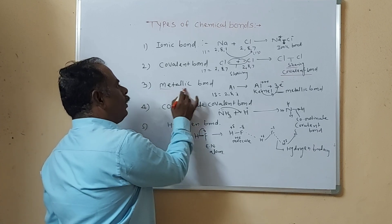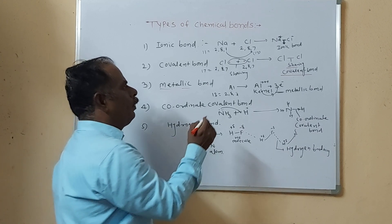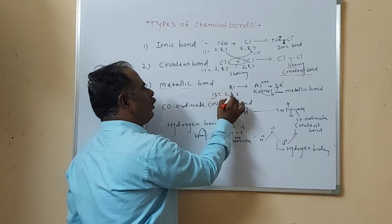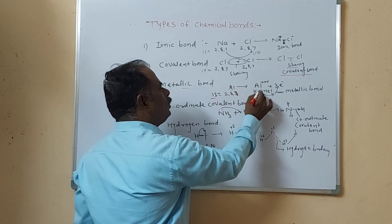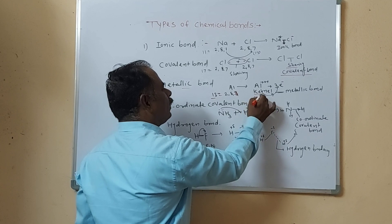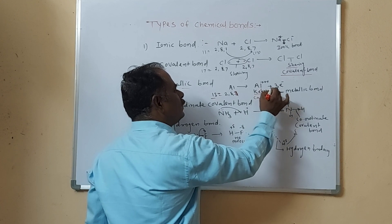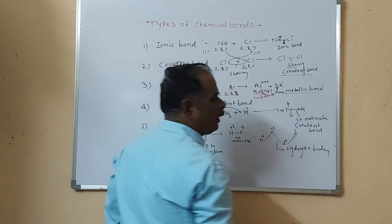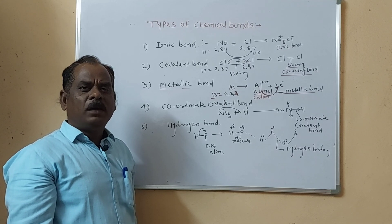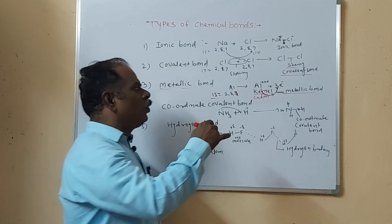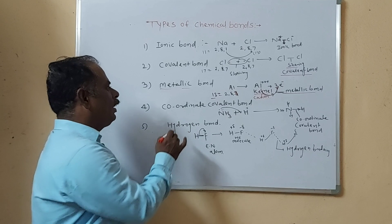Next, metallic bond. Metallic bond is only observed in metals. For example, aluminum: atomic number of aluminum is 13, electron distribution 2,8,3. The last shell contains 3 electrons. Aluminum loses these 3 electrons to form a positively charged ion called a cation. The attraction formed between this cation and the loose valence electrons is referred to as the metallic bond. The attraction produced between the positively charged ion and its own loose valence electrons is called metallic bond, and it is only observed in metals.